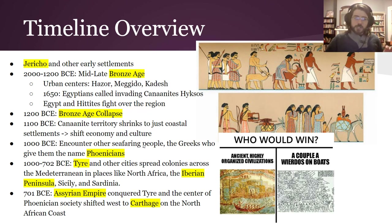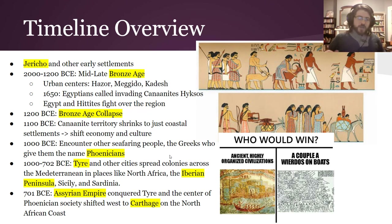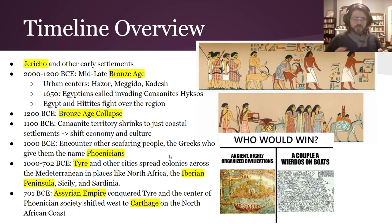They encounter other seafaring people like the Greeks, who are the ones who give them the name Phoenicians, because they would have called themselves something different. From about 1000 BCE to 702 BCE, Tyre — one of the major cities that existed after the collapse — spreads its colonies, along with some other cities, across the Mediterranean Sea Basin: North Africa, the Iberian Peninsula (like Spain), Sicily, and Sardinia. But in 701 BCE, the Assyrian Empire conquers Tyre, and the center of Phoenician society shifts to Carthage, who we will meet again in a later unit when they fight with Rome.